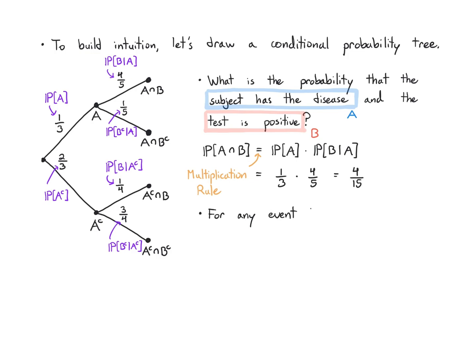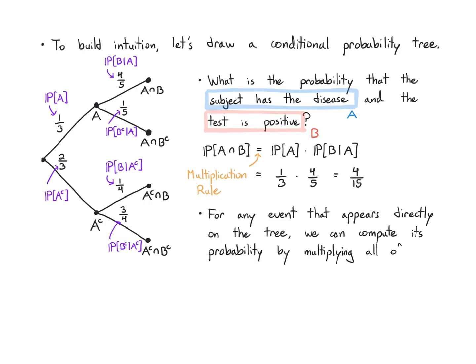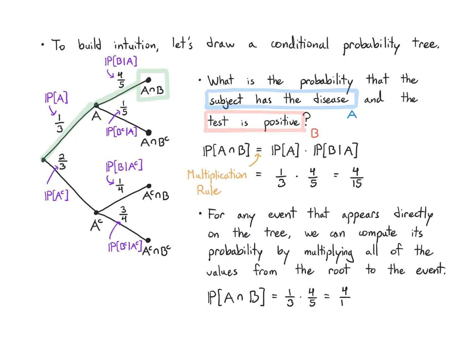I can also use the tree directly. For an event that appears directly on the conditional probability tree — in this case A intersect B is one of the nodes — I start from the root on the left-hand side and multiply all of the values along the way from the root to the event I'm interested in. Following the green path from left to right to reach A intersect B, the values I encounter are one-third times four-fifths, which gives four-fifteenths — exactly the same calculation. If you're interested in an event in the middle of a deeper tree, you just stop at the event you're interested in and multiply your way there.